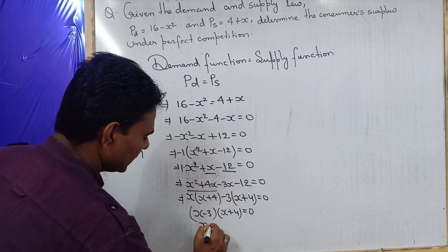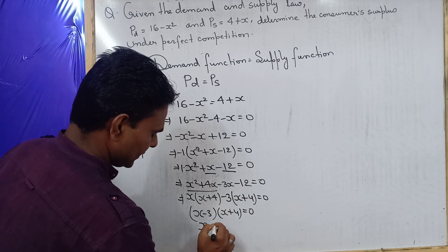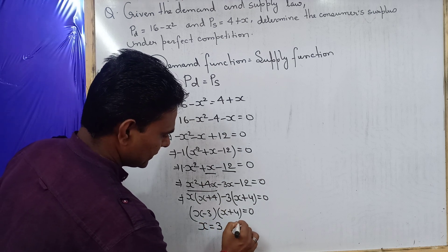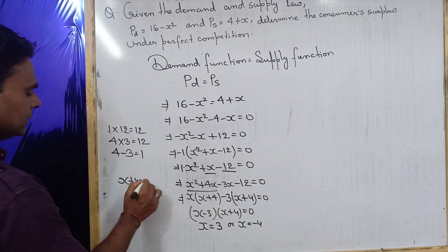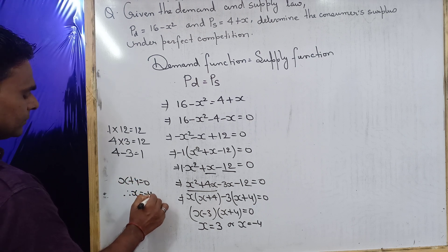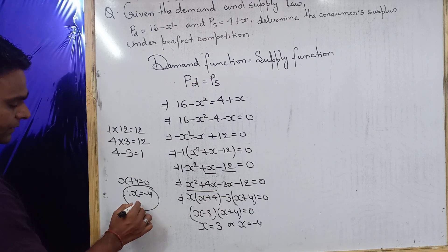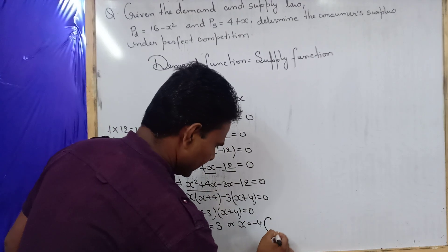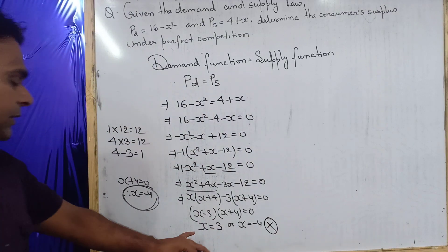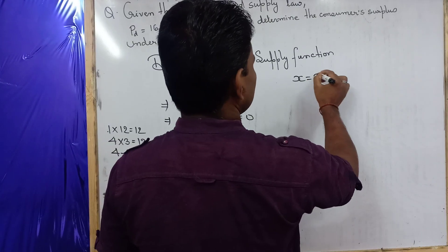So we have (x minus 3)(x plus 4) equal to 0, giving two values of x: x equals 3 or x equals minus 4. Since quantity can never be negative, we need to ignore the value minus 4. So we take x equal to 3.